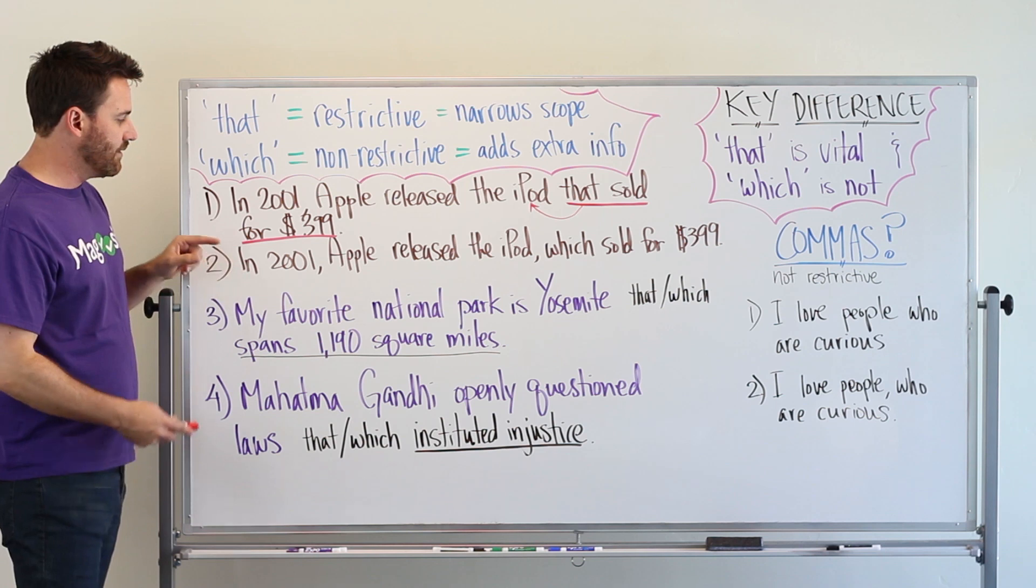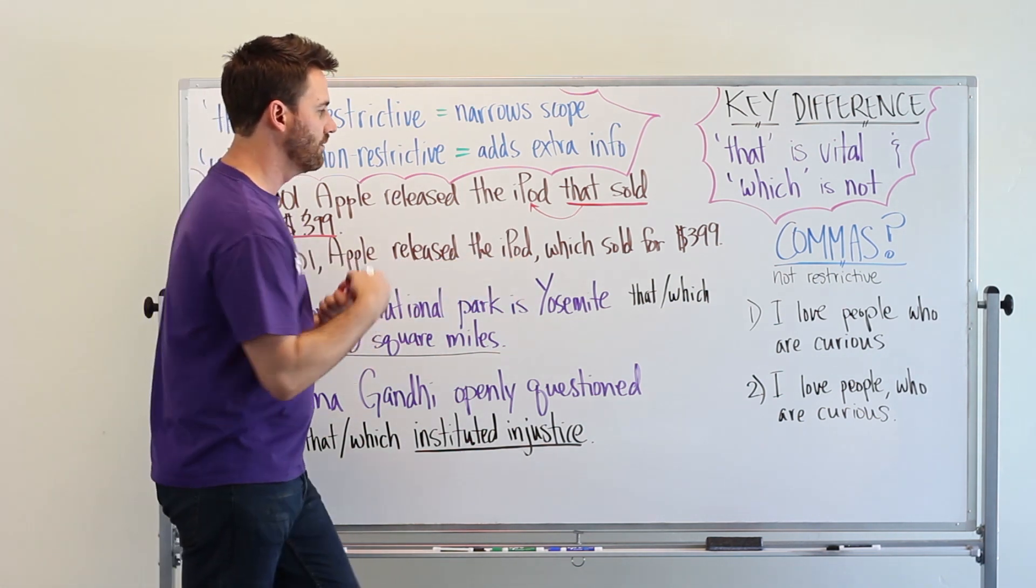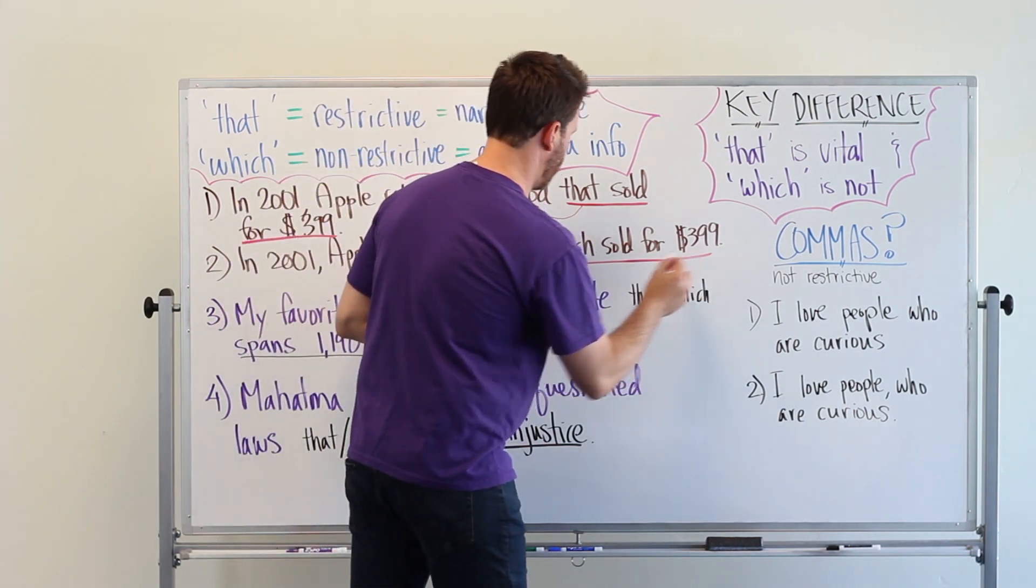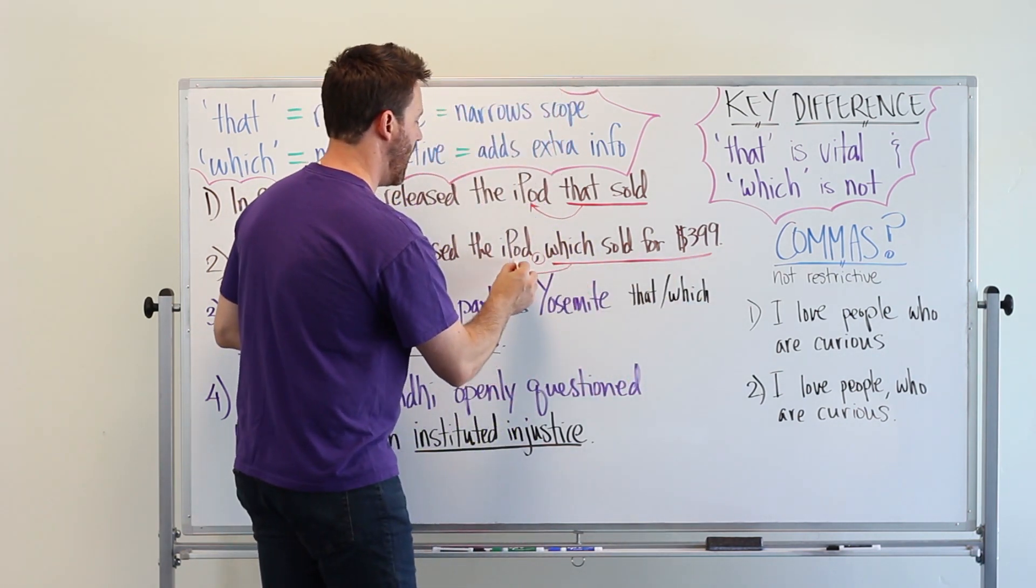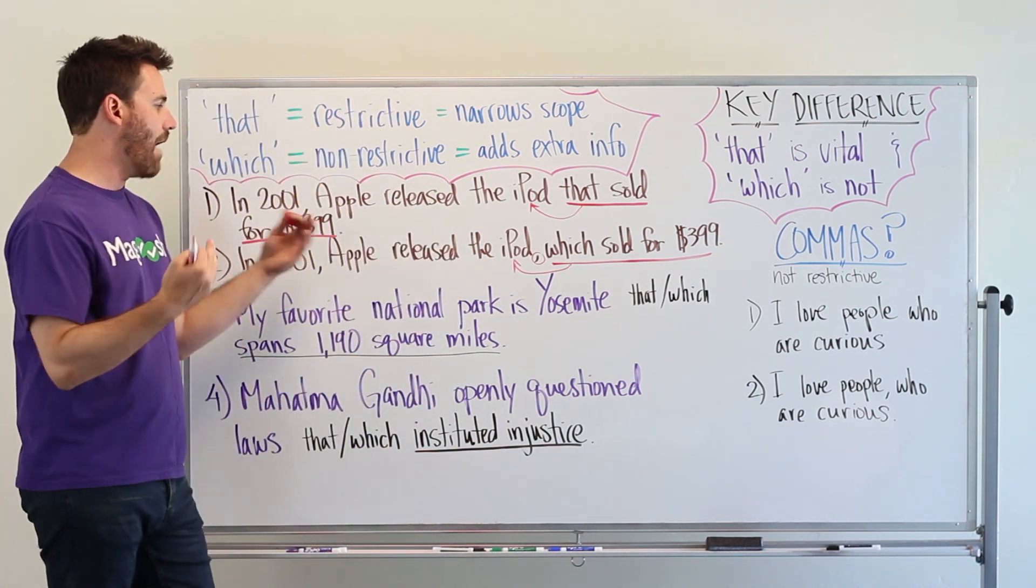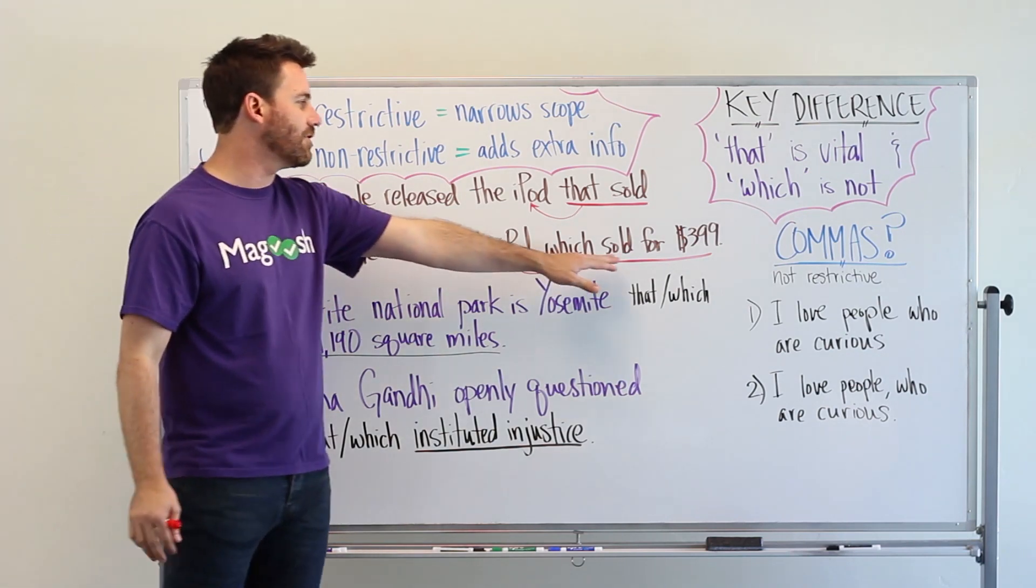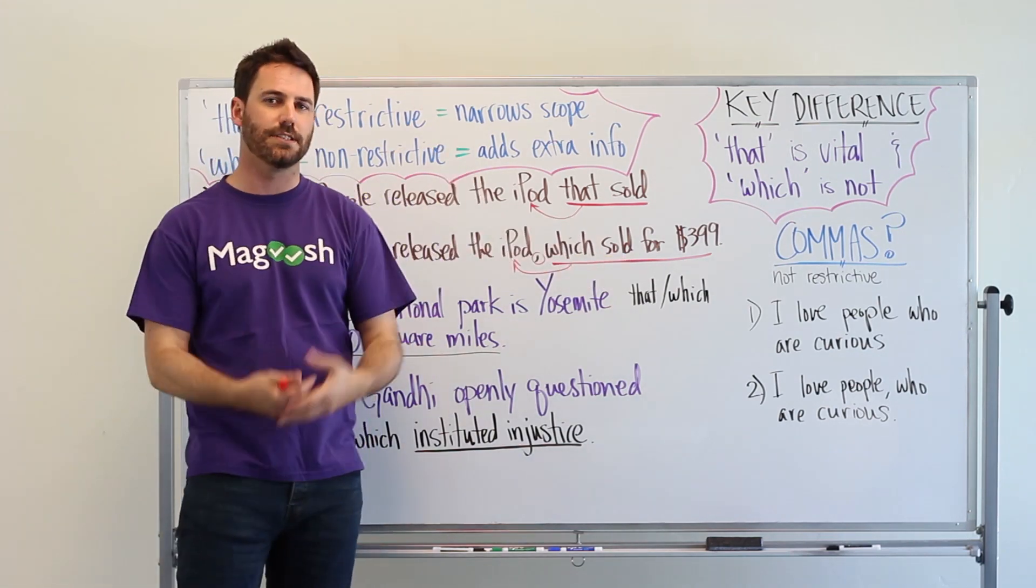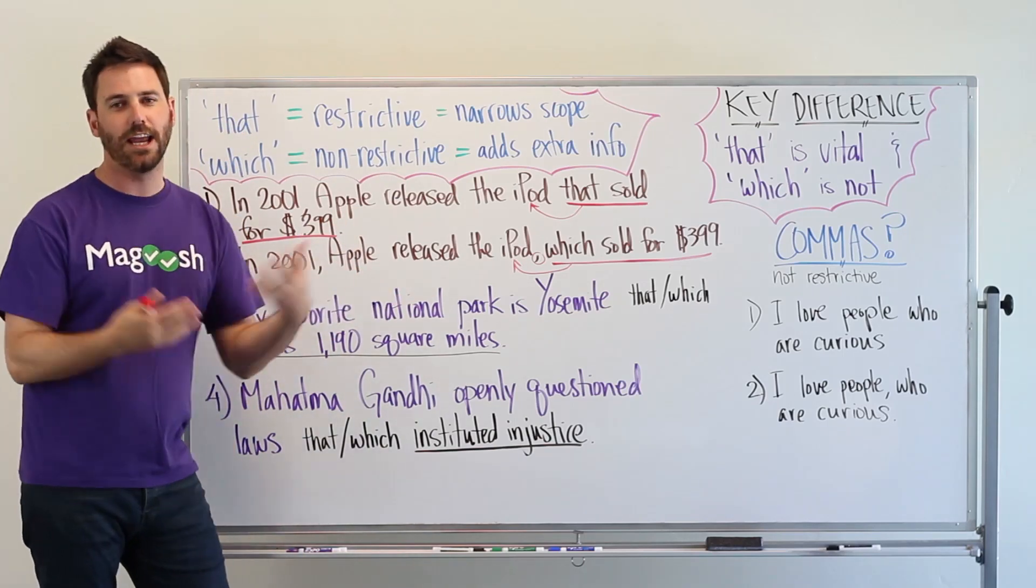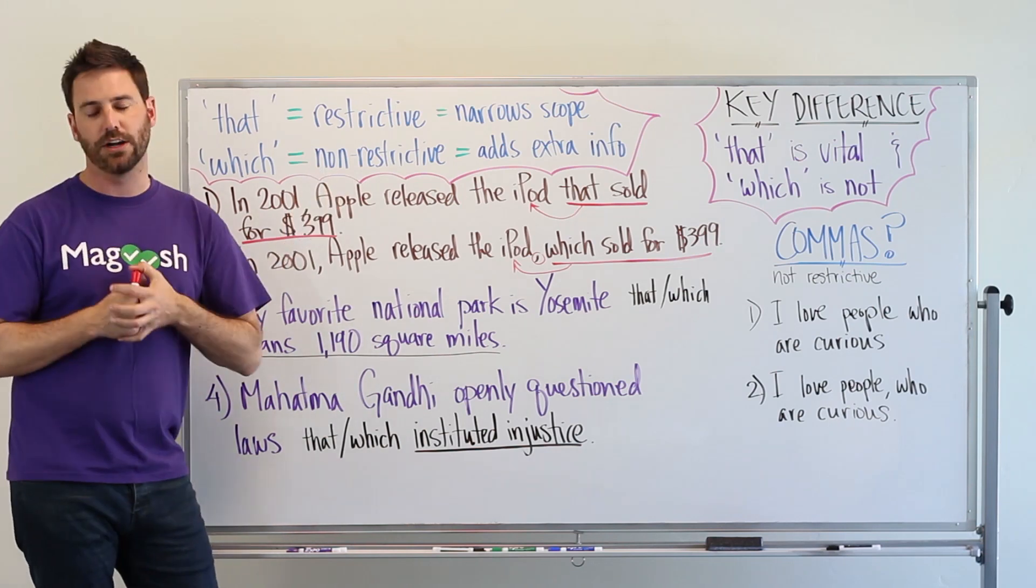In this sentence, in 2001 Apple released the iPod comma, we'll talk about that, which sold for $399. In this sentence the emphasis is on the fact that Apple released an iPod in 2001 and then this information is sort of non-essential. It's not necessary, it's just kind of a nice aside and it's adding information letting the reader know that this iPod that they released sold for $399.